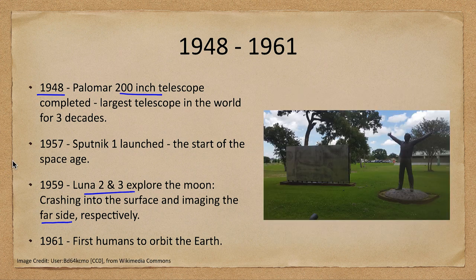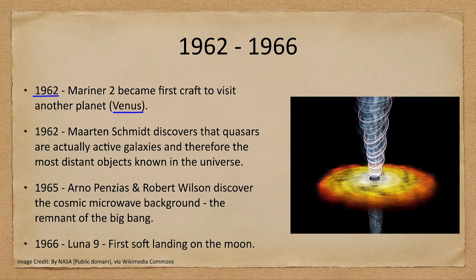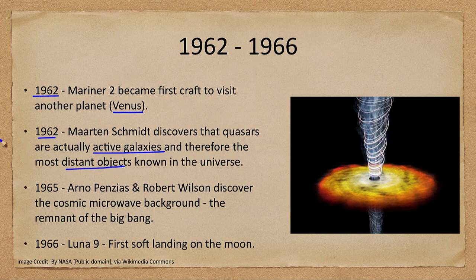In 1961, we had the first humans to orbit the Earth, beginning detailed exploration of space. In 1962, we had the first craft to visit another planet — just a few years after the first satellite was put into orbit, Mariner 2 flew by Venus. Also in 1962, Maarten Schmidt discovered that quasars, previously thought to be star-like objects, are actually distant active galaxies — now known as the most distant objects in the universe.